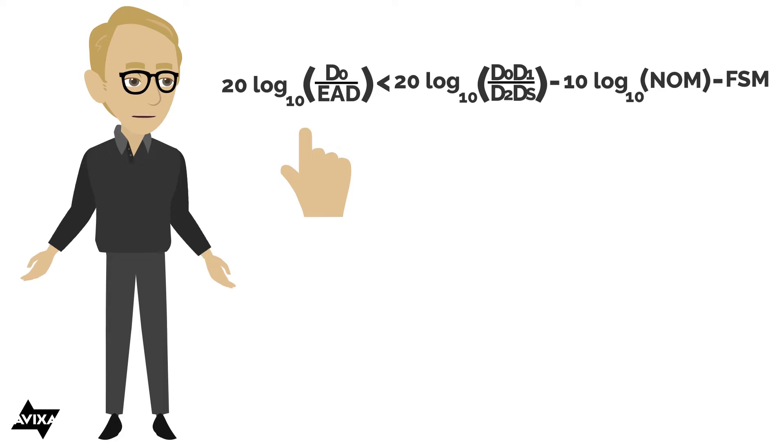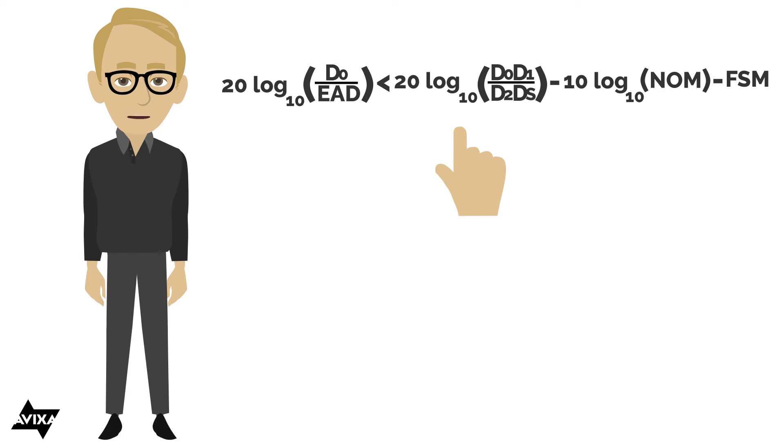And then we'll look at all the variables here, but the Needed Acoustic Gain needs to be less than the Potential Acoustic Gain. And we're going to calculate all this and look at some of the other numbers as well. So let's take a look at this.